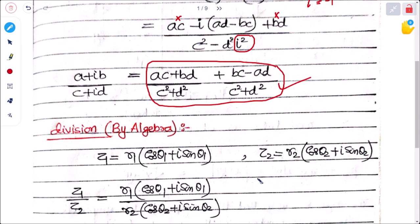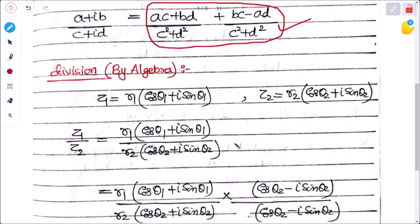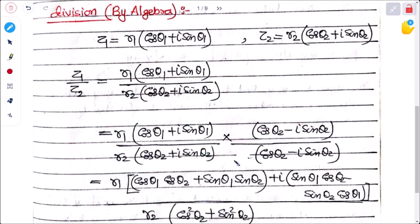Next is division in polar form. Let z₁ = r₁(cos θ₁ + i sin θ₁) and z₂ = r₂(cos θ₂ + i sin θ₂). Then z₁/z₂ = r₁(cos θ₁ + i sin θ₁) divided by r₂(cos θ₂ + i sin θ₂). We rationalize using the conjugate of the denominator.